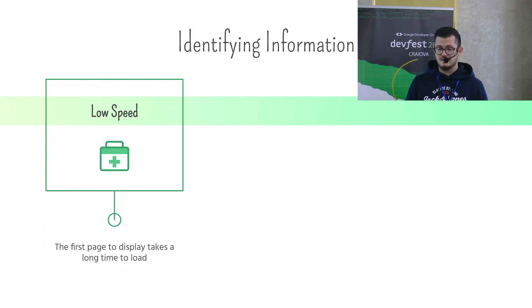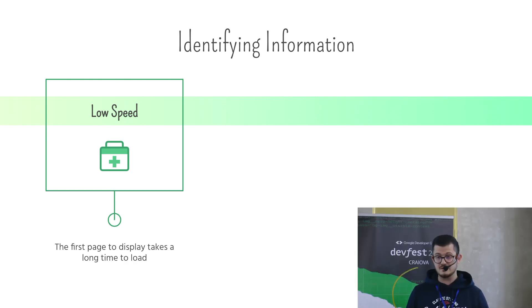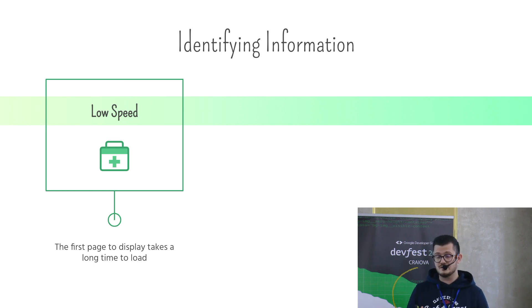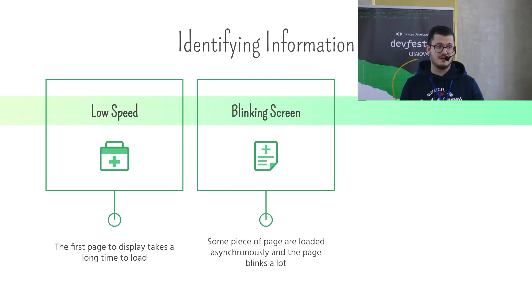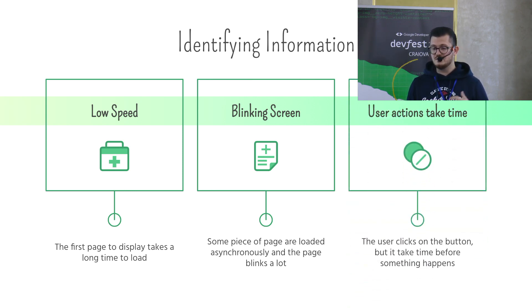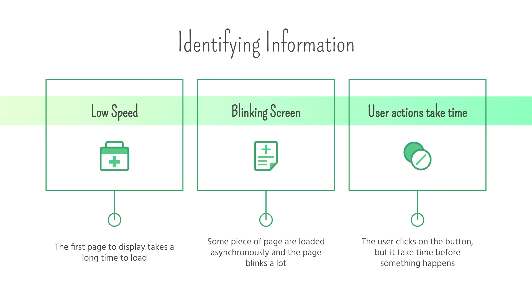Based on the user's feedback, we can retrieve three important pieces of information. The first one is low speed — the first page takes too long to display, resulting in a blank page when users launch the application. The second is blinking screen — some pieces of the page are loaded asynchronously and the page blinks a lot, causing the user to lose reading focus. The last is that user actions take too much time — the user clicks on a button but it takes time before something happens, before the data is refreshed.